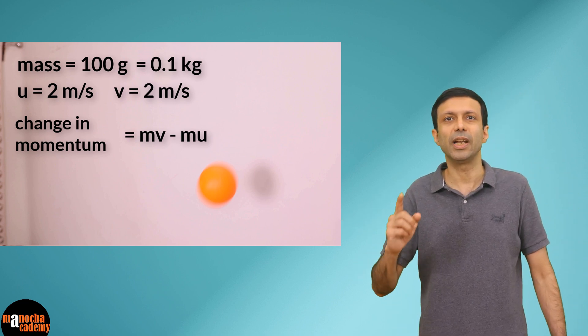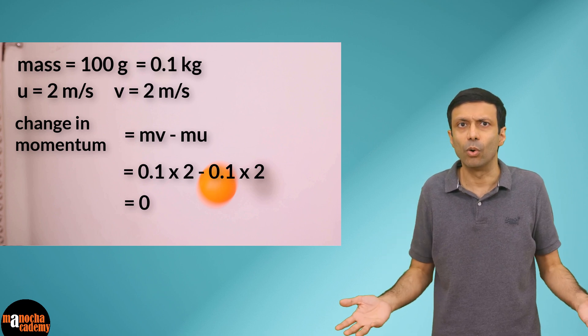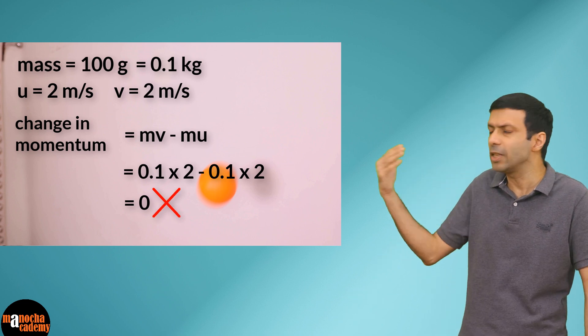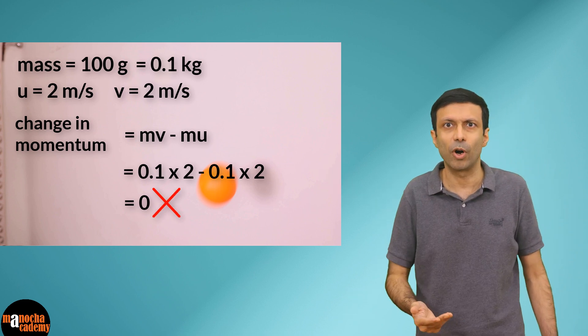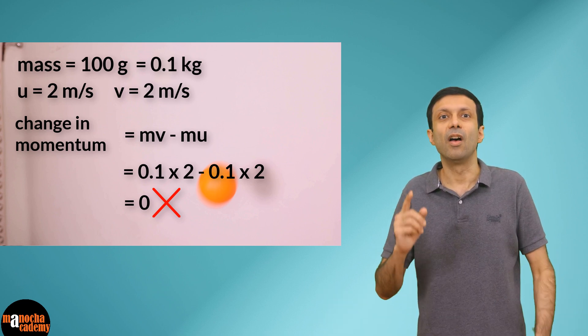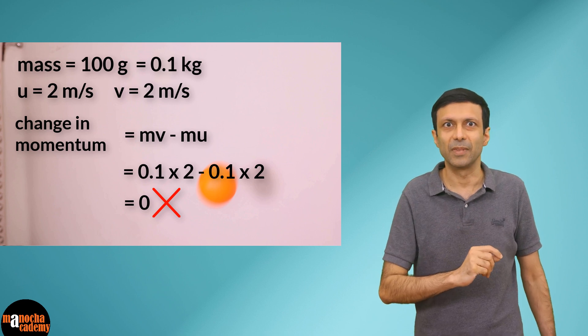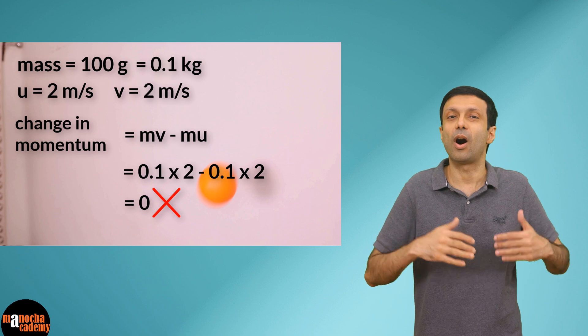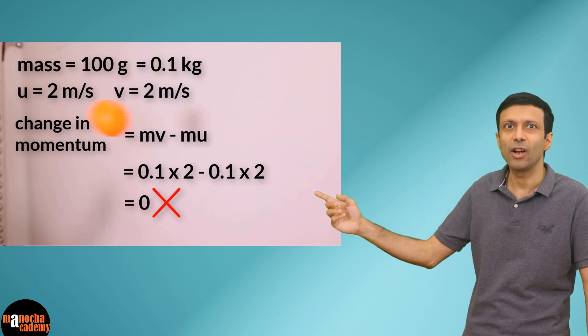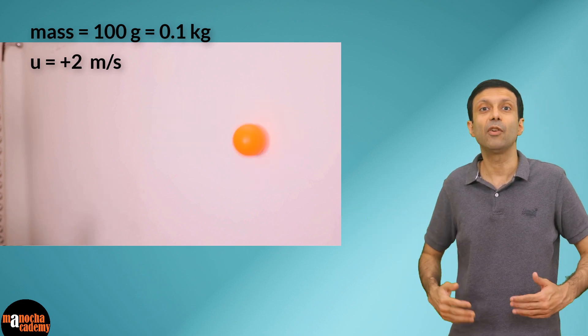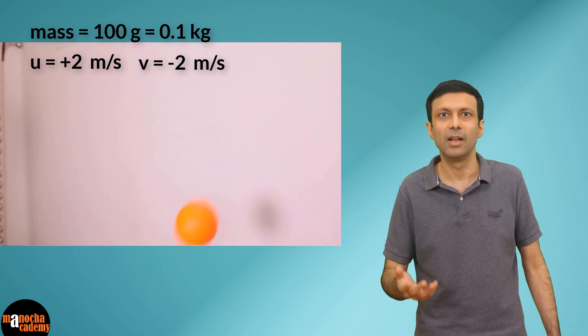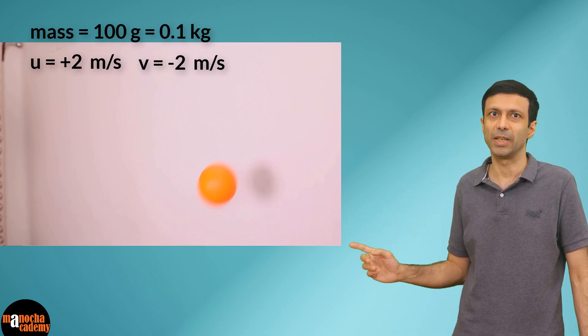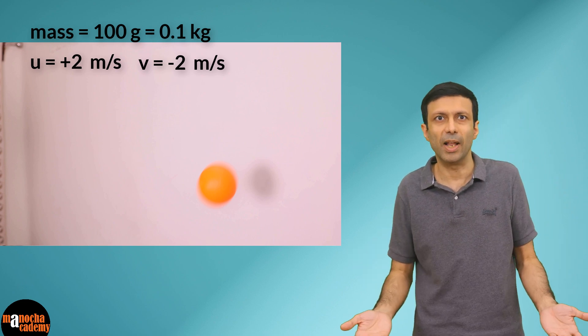The change in momentum is final momentum minus initial momentum, that is mv minus mu. If you plug in those values you get zero — but the change in momentum can't be zero, since the ball is bouncing back and the wall is applying a force. What went wrong? Remember, velocity is a vector quantity — it has both magnitude and direction. After collision, the ball moves in the opposite direction, so we need to take one velocity as positive and the other as negative.